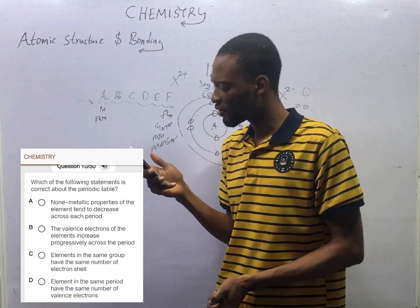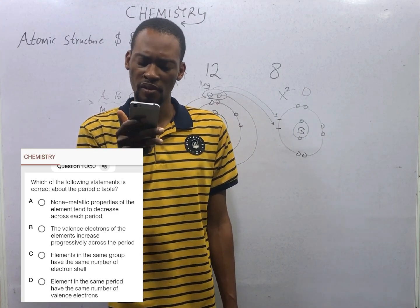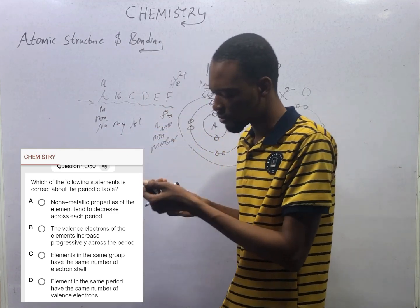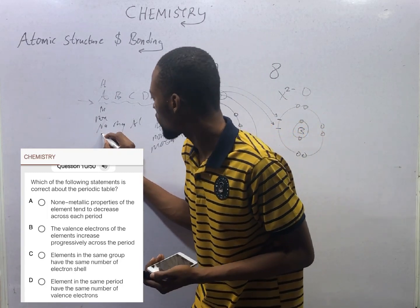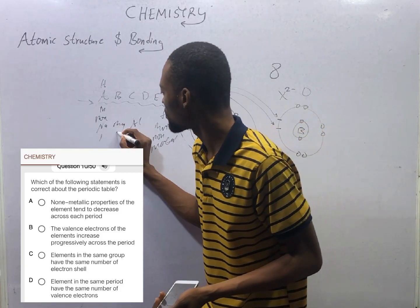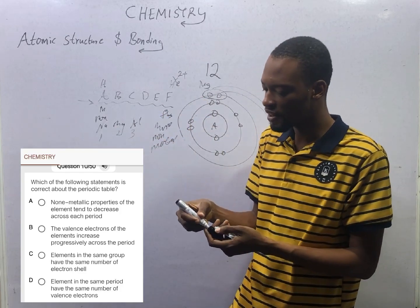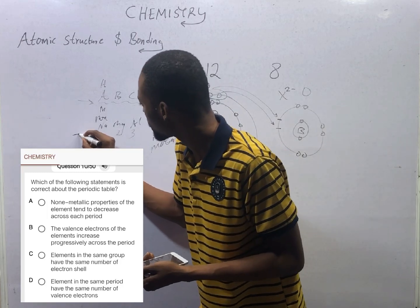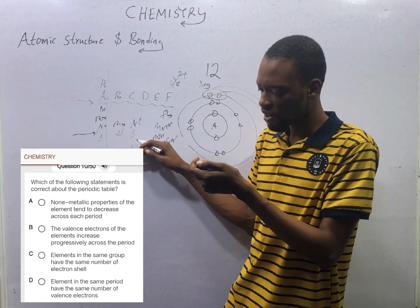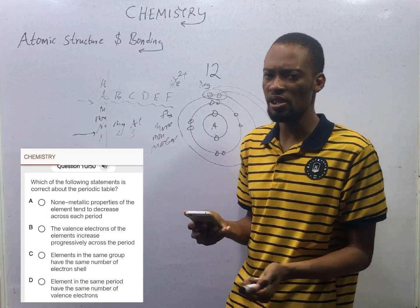Option B: the valence electrons of the elements increase progressively across the period. If we have sodium, magnesium, aluminium — the valence electrons in sodium is 1 (Group 1, one electron in the outermost shell). The valence electrons in magnesium is 2, aluminium is 3, and carbon has 4 valence electrons. So as you move progressively across the period, the valence electrons of the element will actually increase. Option B is a true statement.